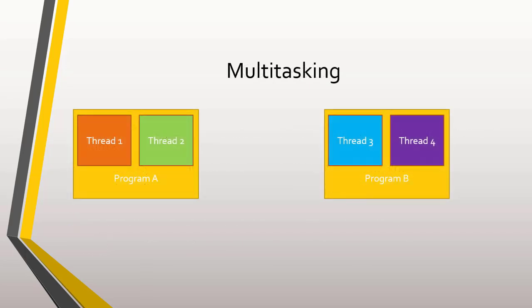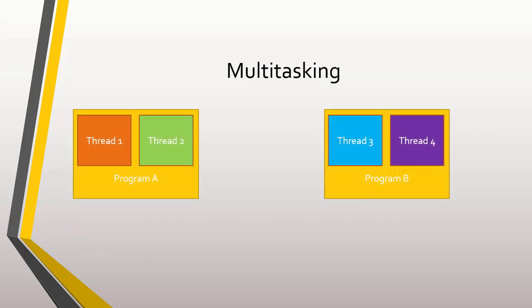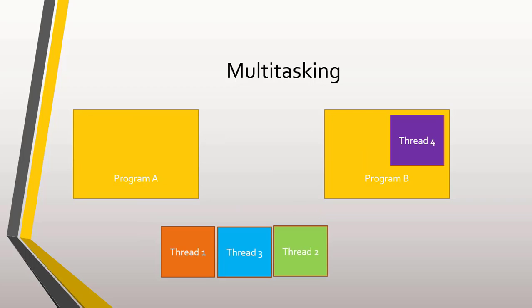For example, if we have a program A with threads 1 and 2, and a program B with threads 3 and 4, and we try to execute both programs at the same time, it could be that the system executes the threads in the following order: 1, 3, 2, and 4.